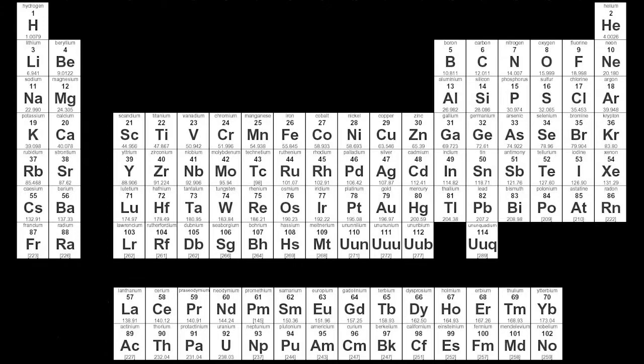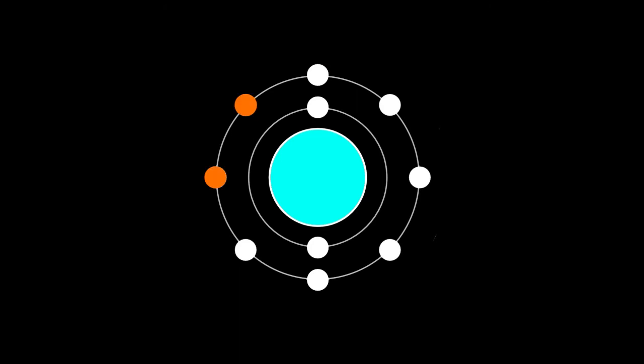All elements in the periodic table strive to be like the noble gases. They want 8 electrons on their outer orbit so they can become stable. In order for this to happen elements must lose or gain an electron.